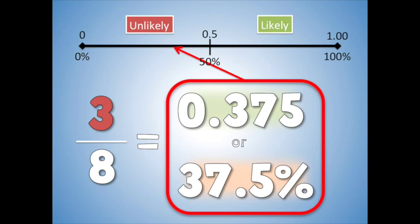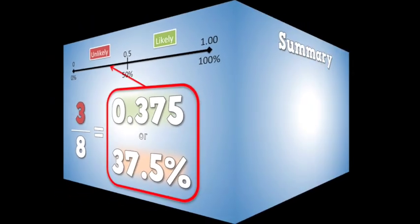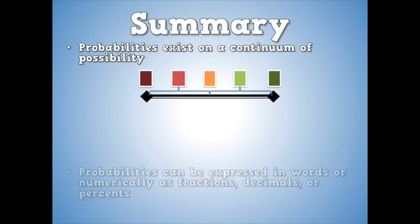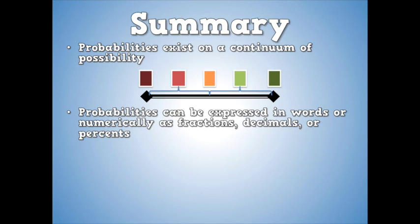Let's go to a summary here. Probabilities exist on a continuum of possibility. That continuum ranges from impossible to certain, with varying possibilities between them. Something that's unlikely is still possible. It just probably won't happen. Something that's likely probably will happen, but it isn't guaranteed to happen. Probabilities can be expressed in words or numerically as fractions, decimals, or percents.